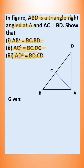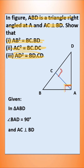Given: in triangle ABD, angle BAD is 90 degrees. And they have also given that AC is perpendicular to BD, so these two angles are 90 degrees. In similar problems, we know that the 3 triangles are similar to each other. The same concept we have to use now.